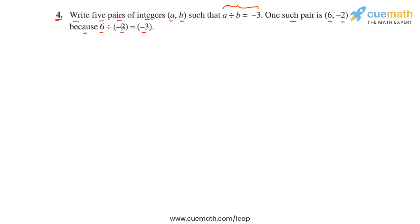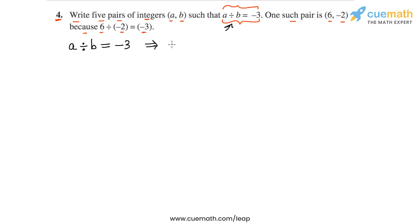So, a divided by b is equal to minus 3. If we convert this statement into multiplication form, this means that a is equal to minus 3 times b.